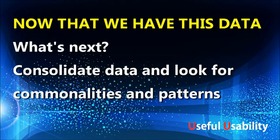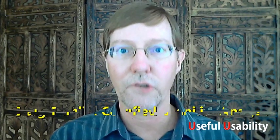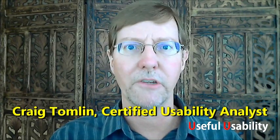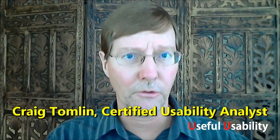What's next is we want to consolidate this data and start looking for commonalities and patterns across the various people that we have observed. There are always going to be outliers, and you want to get used to throwing that kind of information away. We can ignore those edge cases and really focus on the core patterns that are consistent across all of the people we observed.